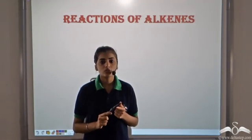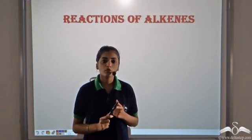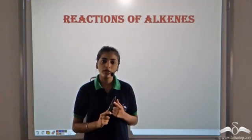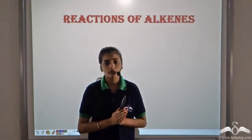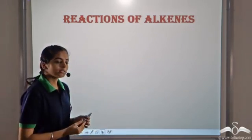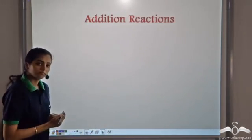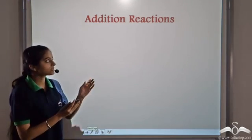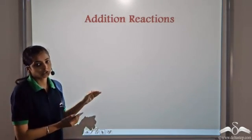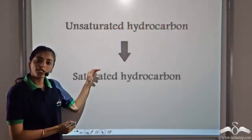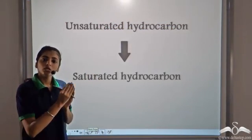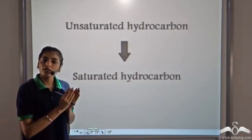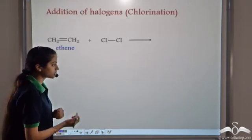Alkenes are unsaturated hydrocarbons having the general formula CₙH₂ₙ. We have seen the formation of alkenes; now let's look at some of the reactions of alkenes. Alkenes give addition reactions because all unsaturated hydrocarbons tend to become saturated. So an alkene, being an unsaturated hydrocarbon, always tends to become saturated, and this is done by addition reactions.